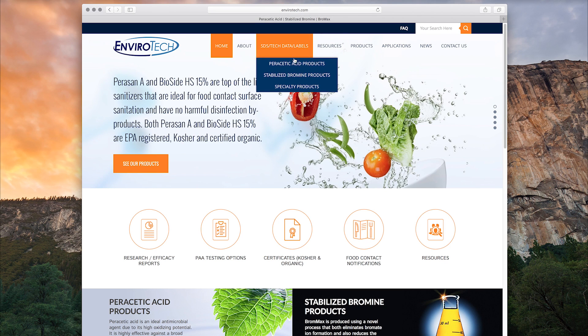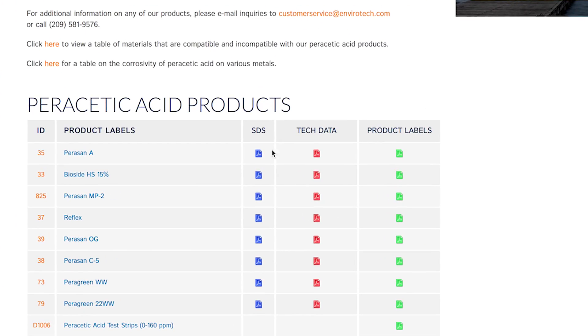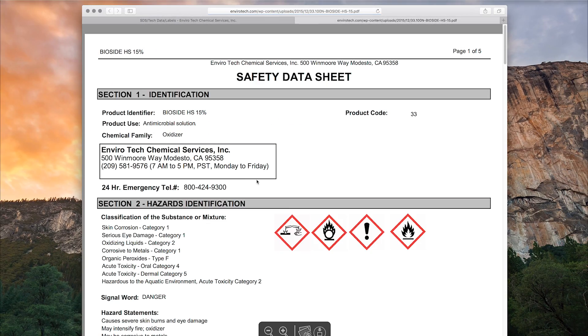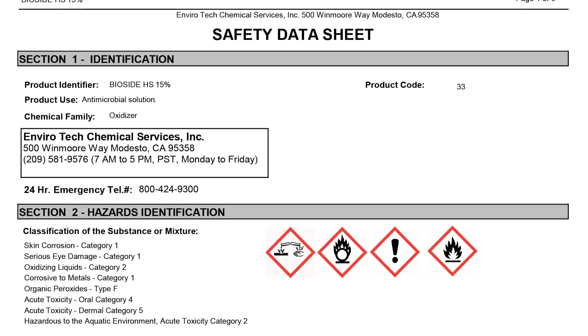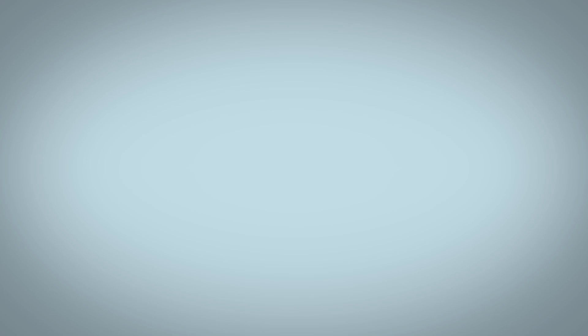Safety data sheets for all Envirotech products can be found on the website and should be reviewed before handling the products. Safety data sheets should also be kept on hand near where the chemicals are stored for reference.